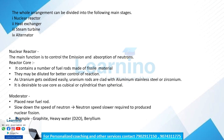The moderator is used to slow down the speed of neutrons. The neutron speed needs to be reduced to the speed required to produce nuclear fission. When uranium absorbs neutrons, nuclear fission occurs. To slow down neutron speed and enable nuclear fission, we use a moderator. The moderator materials used are graphite, heavy water, and beryllium.